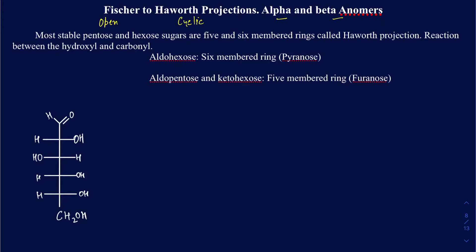If you have a six-membered sugar or a five-membered sugar, you could make either a six-membered ring or a five-membered ring, depending on what type of functional group you have. If you have an aldehyde hexose, it will have an aldehyde group, and when it cyclizes it's going to make a six-membered ring — another name for that is pyranose. If you have an aldehyde pentose or a keto hexose, they both tend to make a five-membered ring, called a furanose. Those rings all have one oxygen in them.